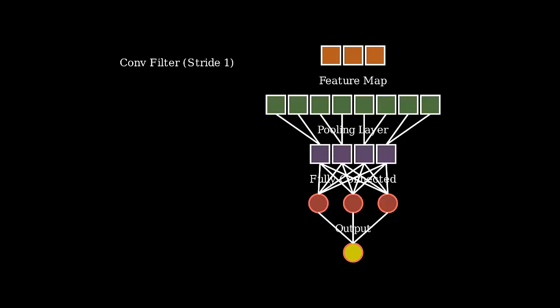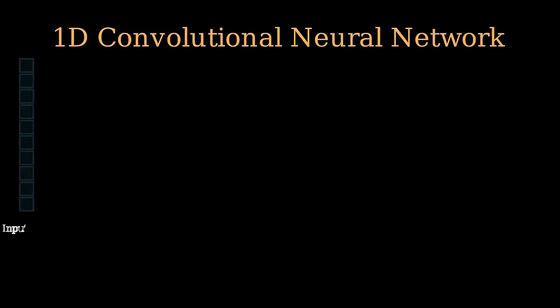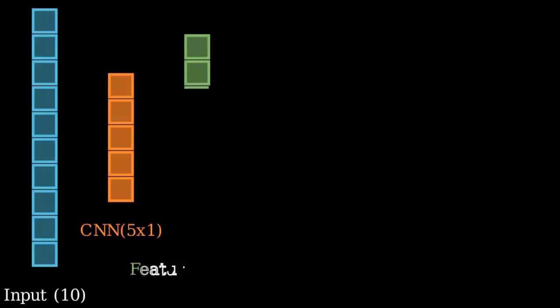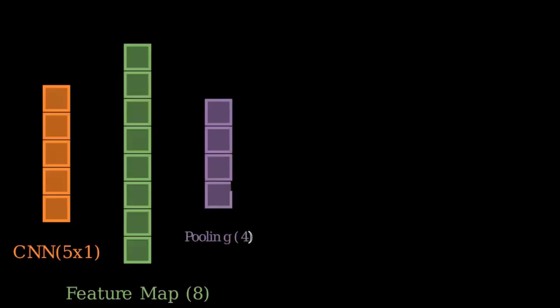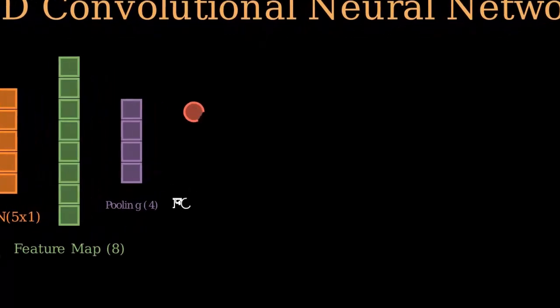Let's pull all the pieces together and look at the typical architecture of a 1D convolutional neural network. It begins with the input layer, which holds our raw sequence data. Here we have a sequence of 10 data points. Next is the convolutional layer. This layer contains the learnable kernel, which is shown here as a 5 by 1 filter. When the 5 by 1 kernel slides across the 10-point input, it produces a shorter sequence called the feature map. This map, which is 8 points long, contains the extracted high-level features. Following that is the pooling layer. Using max pooling, we reduce the feature map from 8 points down to just 4 points, condensing the information and making the model more robust.